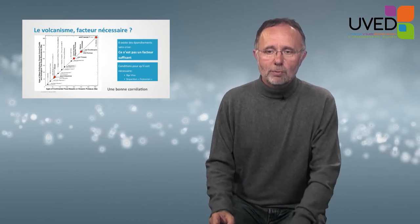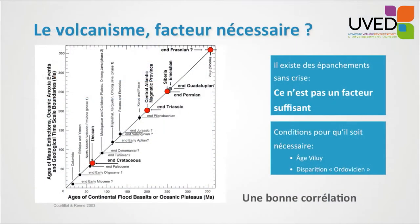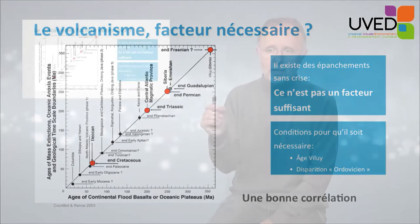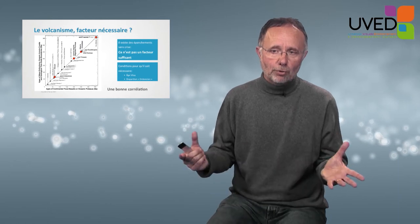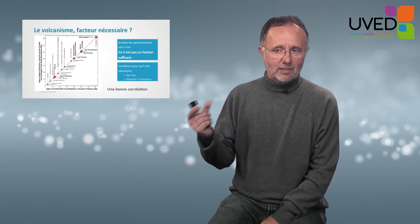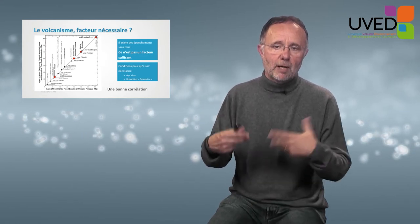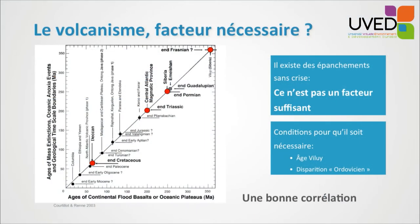What about the mechanisms? Here we have a very famous curve from 2003, Cotillo and Rennes, matching the time of crises and the time of basalt floods. We have basalt floods that match no crisis, so basalt flooding is not a sufficient factor to trigger a crisis. We also need to understand whether there is a correlation between the Devonian crisis and the floods — we have nothing for the Ordovician, though it's a very ancient period and the floods may have disappeared in subduction areas since then. So we can't rule it out, and we have a fairly good overall correlation.